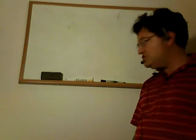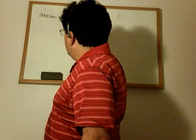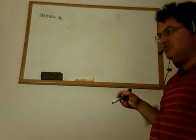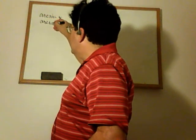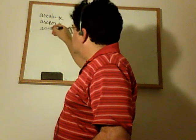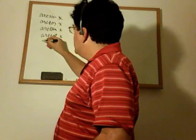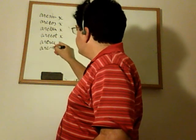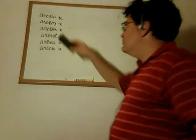Hi. I'm going to talk about the inverse trigonometric functions, in particular the arc sine of x. As you know, there are six regular trigonometric functions, and each of those has an inverse. So the inverses of the regular trigonometric functions are arc sine, arc cosine, arc tangent, arc cotangent, arc secant, and arc cosecant. Today I'm just going to talk about the first one: arc sine.